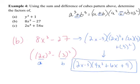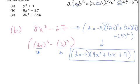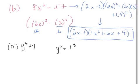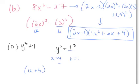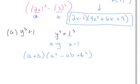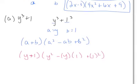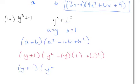Part A is actually easier: y³ plus 1. Write it as y³ plus 1³, so a is y and b is 1. It's already written as cubes, which is why it looks a little misleading. Applying the sum of cubes formula — (a plus b)(a² minus ab plus b²) — we get (y plus 1)(y² minus y plus 1).